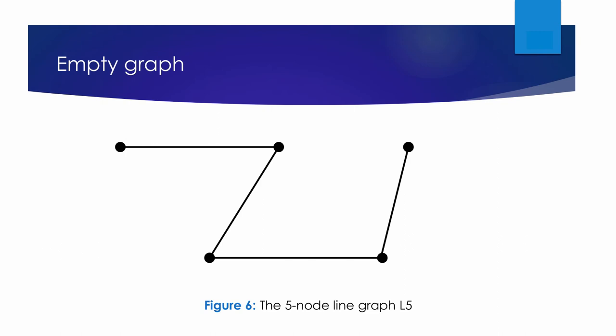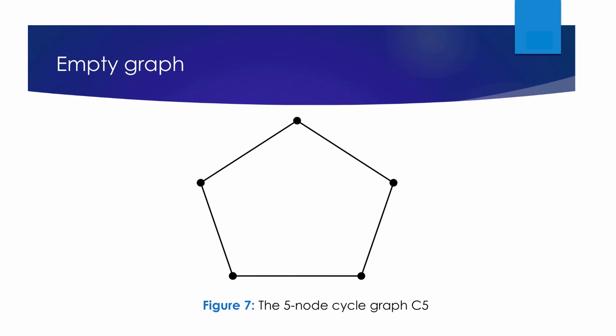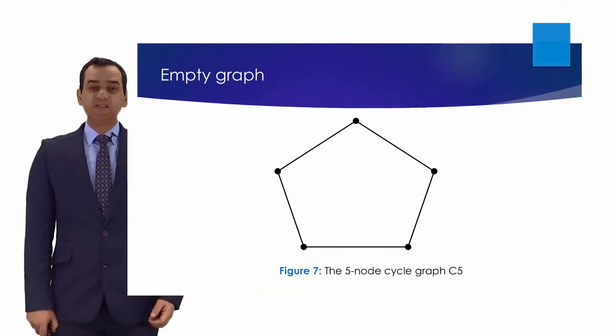An example of the line graph L5 with five nodes is displayed in Figure 4. If we add the edge {v1, vn} to line graph L_n, we get the graph C_n, which consists of a simple cycle. For example, if we add the edge {v1, v5} to L5 shown in the above figure, this results in C5, as illustrated in Figure 5.